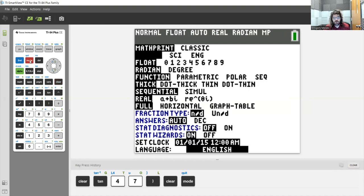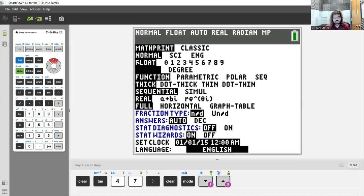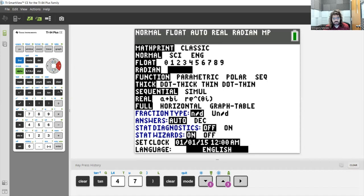we press this mode button, and we can scroll up and down with these arrow keys. And you see radians was highlighted. Let's go over to degree, click enter,